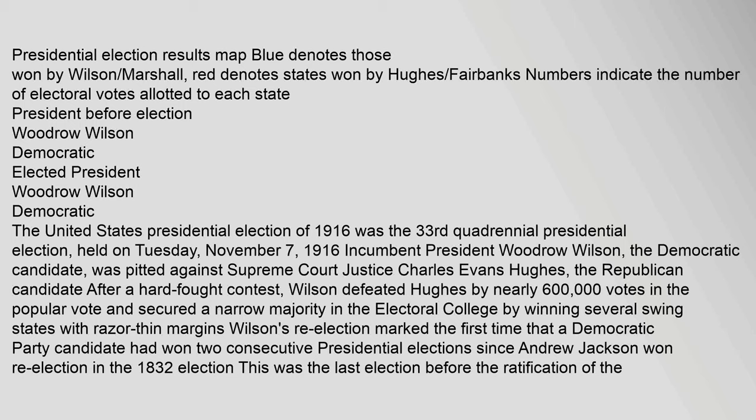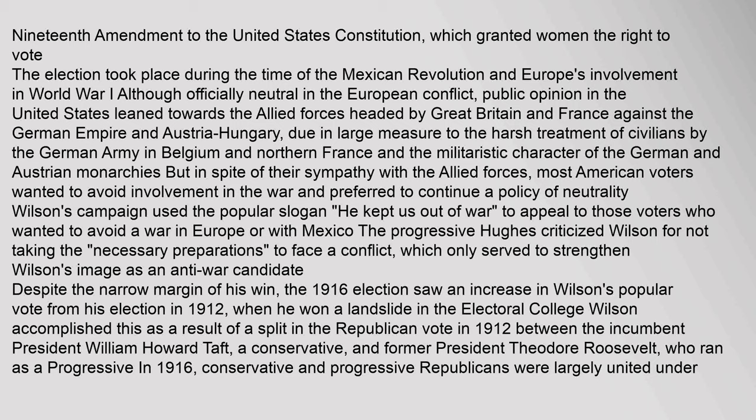Wilson's re-election marked the first time that a Democratic Party candidate had won two consecutive presidential elections since Andrew Jackson won re-election in 1832. This was the last election before the ratification of the 19th Amendment, which granted women the right to vote. The election took place during the Mexican Revolution and Europe's involvement in World War I. Although officially neutral in the European conflict, public opinion in the United States leaned towards the Allied forces against the German Empire and Austria-Hungary, due to harsh treatment of civilians by the German army and the militaristic character of the German and Austrian monarchies.